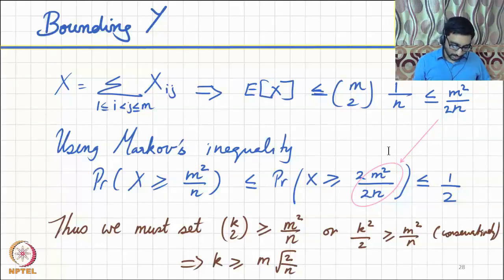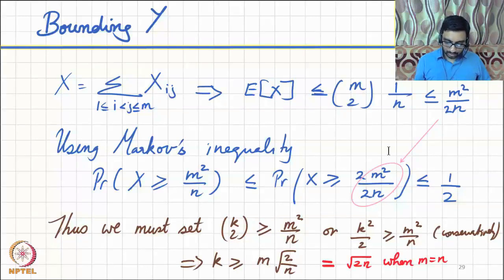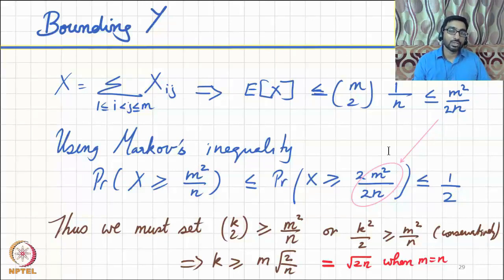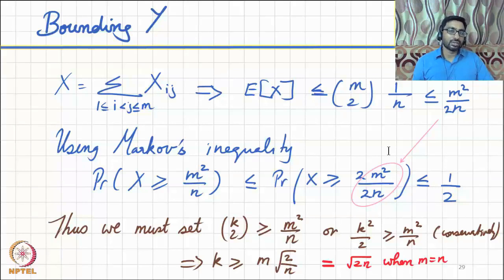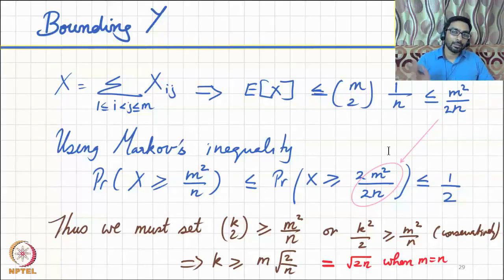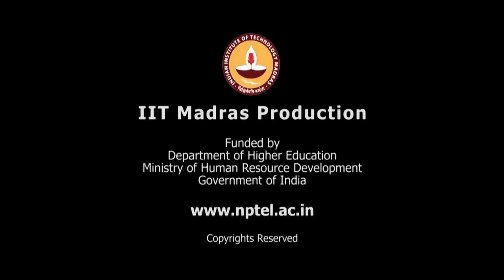This bound is for an arbitrary choice of m, but if we restrict m to be exactly equal to n, we get k ≥ √(2n). This result must be viewed against the backdrop that under fully uniform and mutually independent bin choices, the height of the max loaded bin is at most O(ln n / ln ln n). So our result is significantly worse — no longer logarithmic but proportional to √n — however, we obtained it using a hash function drawn from a two-universal family, making it very general in its application.